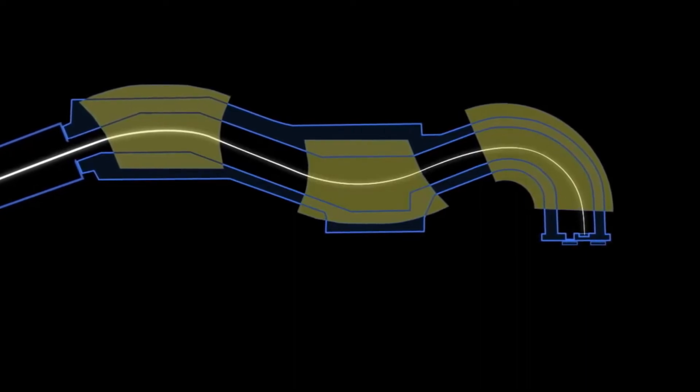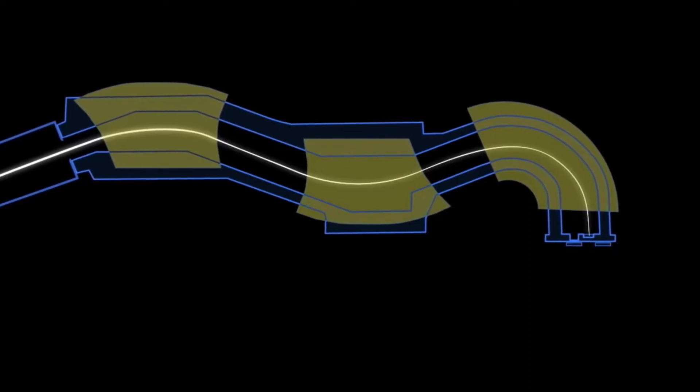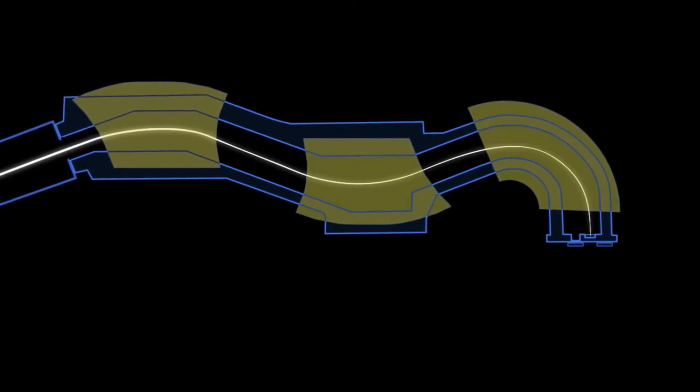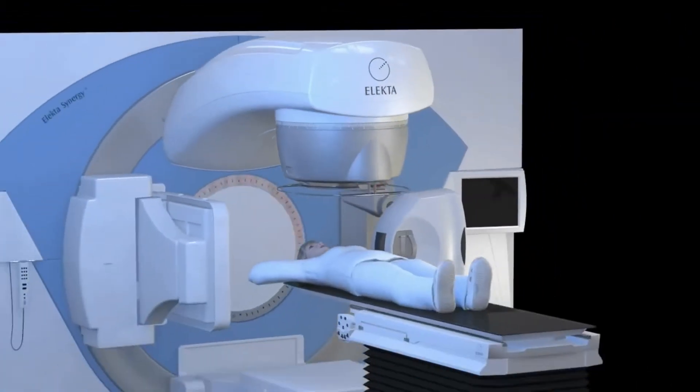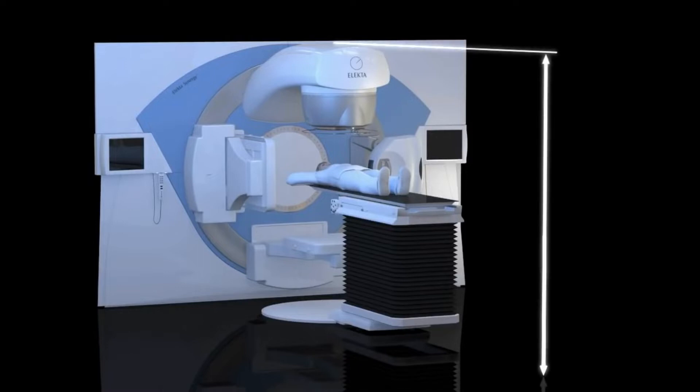The design of the magnets enables them to focus electrons of slightly different energies onto the same point on the target. This is called achromatic behavior. This slalom bending is unique to Electa linear accelerators. It helps to minimize the size of the machine and ensures that its isocenter remains low, which is important for patient setup.